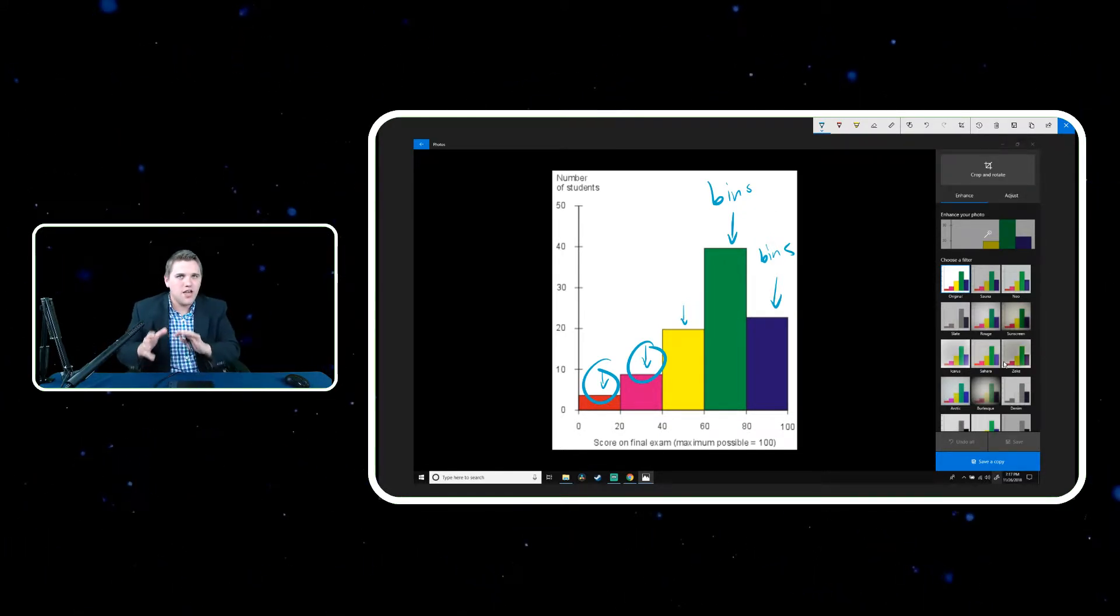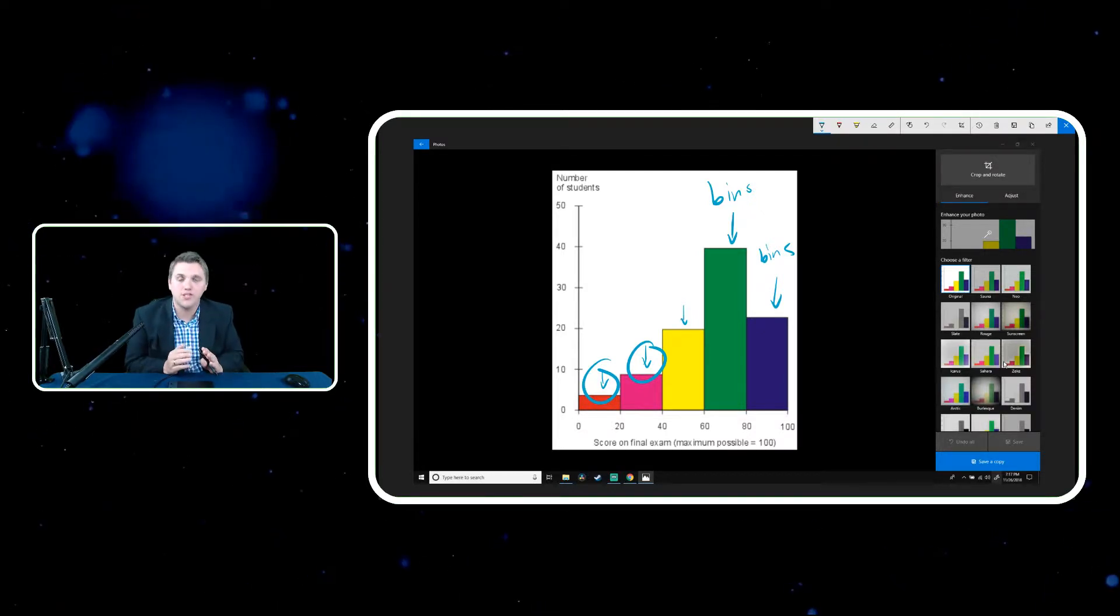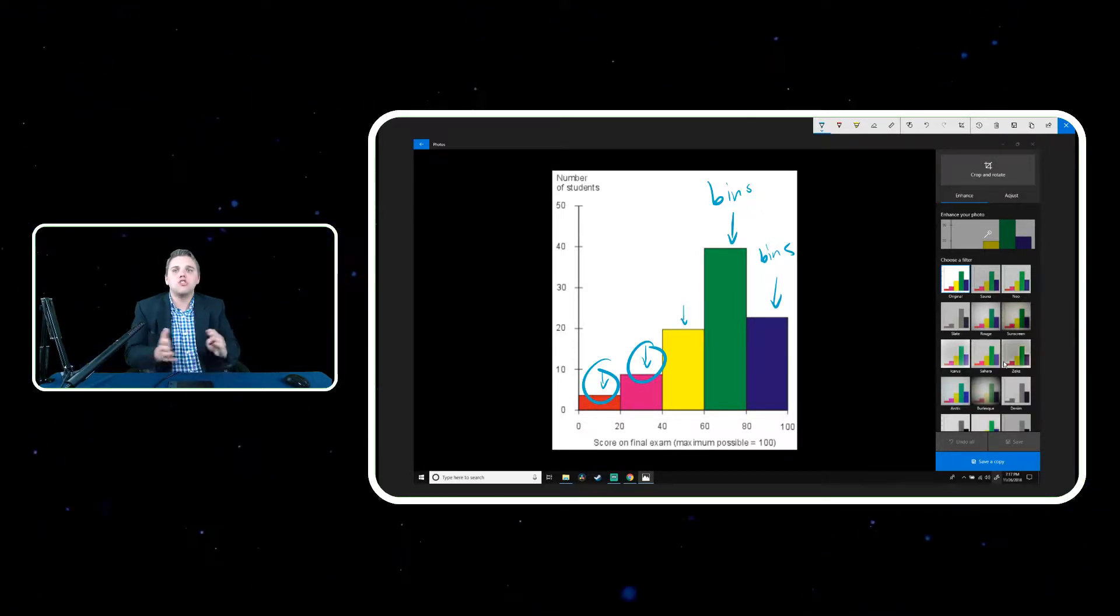This is what differentiates histograms from bar graphs again. Bar graphs are actually represented as bars that are separated from each other. There's like a little gap between the bars, and the reason for that is because there's no sense of closeness when it comes to categorical variables.